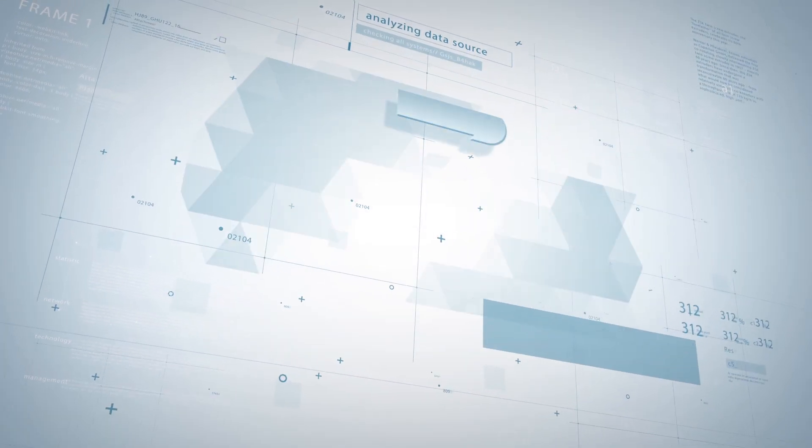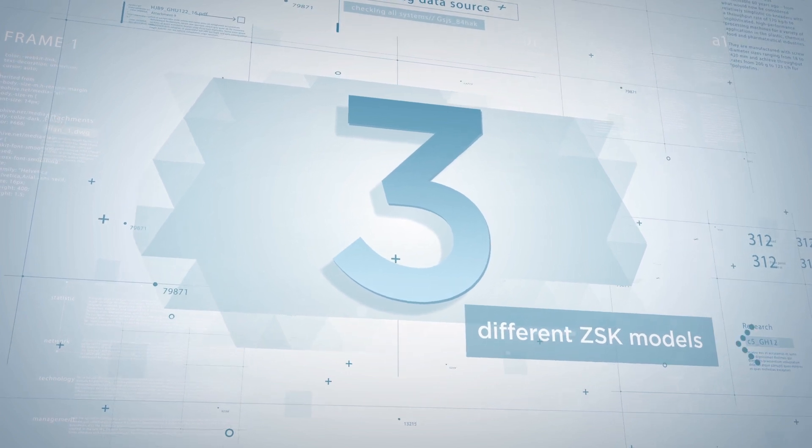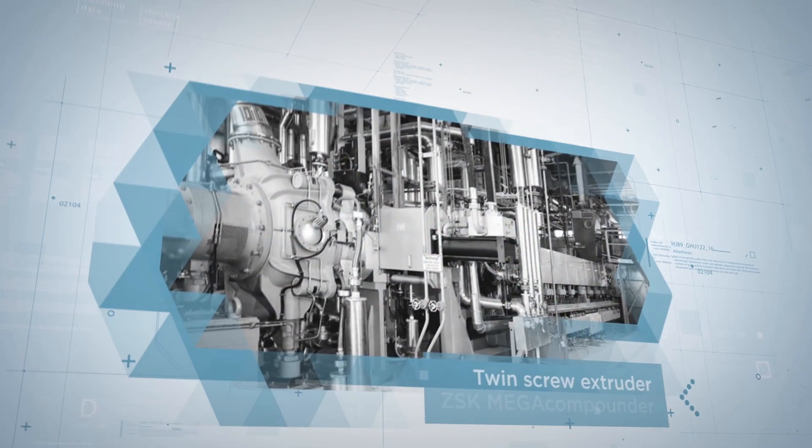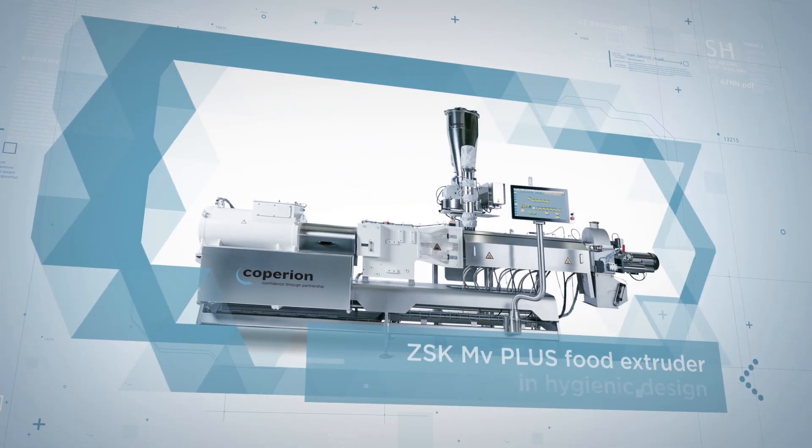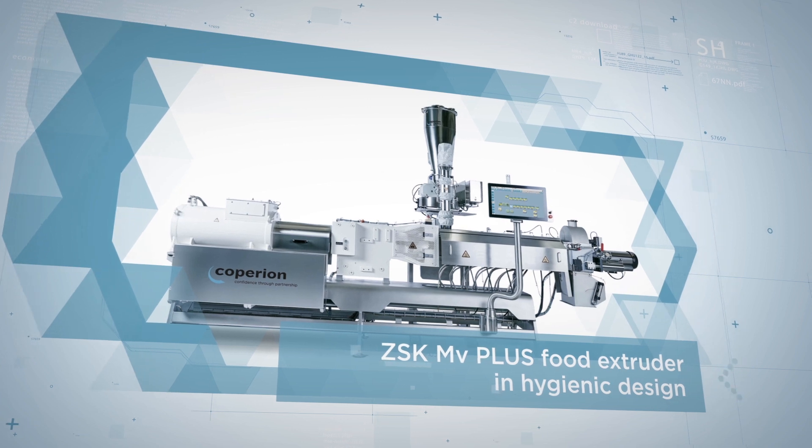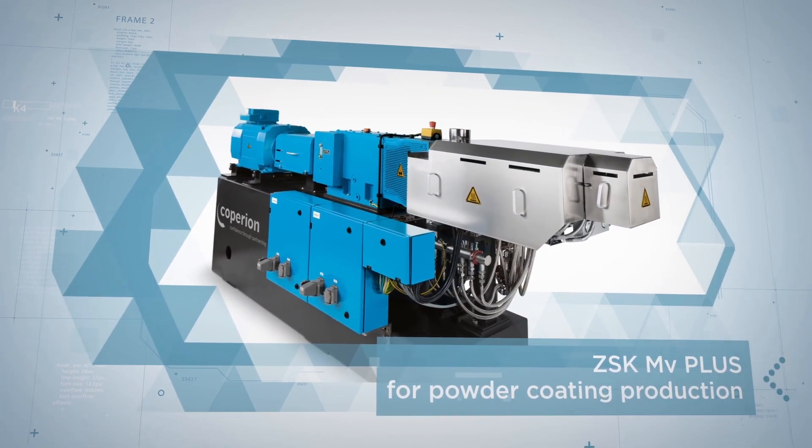Today, Coperion offers three different ZSK models individually tailored to special applications: The high-capacity ZSK Mega Compounder for polyolefin production, the ZSK MV Plus for processes requiring large free volume such as foodstuffs, chemical products, or powder coatings, and the ZSK MC-18.